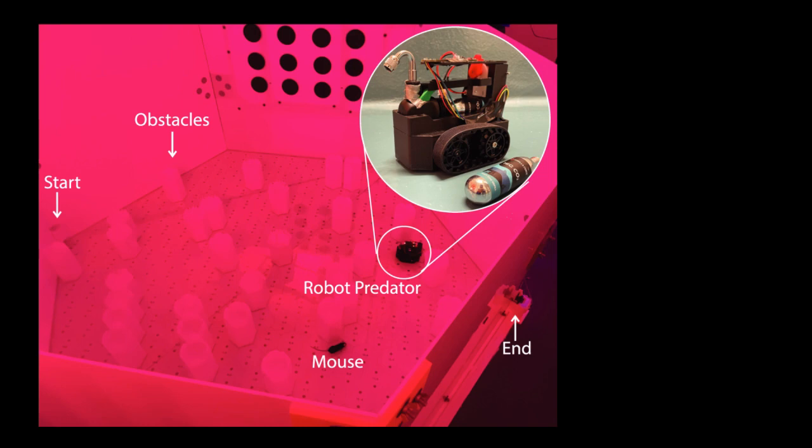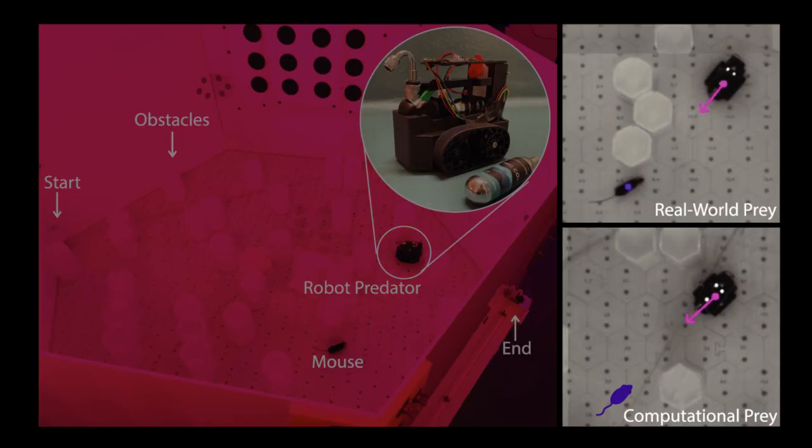The performance of the prey was quantified by the survival rate, the proportion of runs where it completed the task without capture. Data was collected for three types of prey: lab mice, a POMCP agent, and a TLPPO agent.